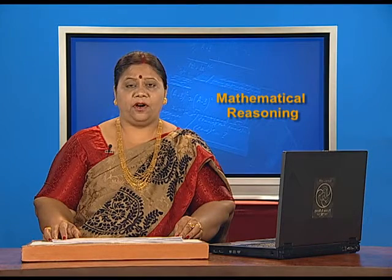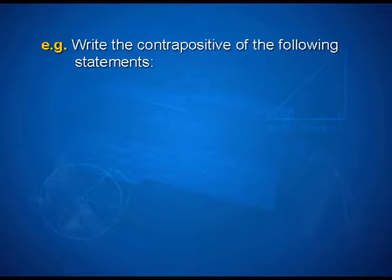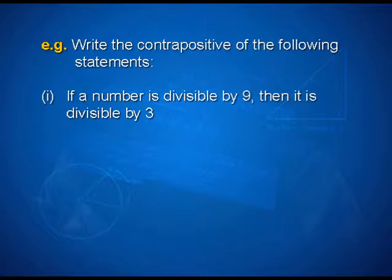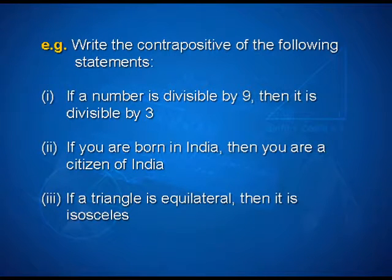Write the contrapositive of the following statements. First, if a number is divisible by 9, then it is divisible by 3. Second, if you are born in India, then you are a citizen of India. Third, if a triangle is equilateral, then it is isosceles.